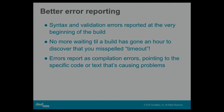Declarative does syntax and validation checking before actually executing the build — right at the very beginning. It goes through and makes sure the syntax looks right, that we've got the right types on all of our steps, that we're not doing something completely insane, and errors out at that point with errors reported as compilation errors pointing to exactly where the error was.